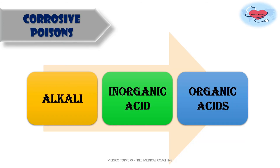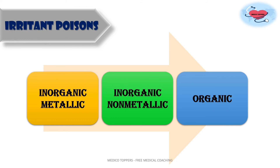Next come corrosives, which are further classified into strong acids, strong alkalis, and metallic salts — these are inorganic poisons. Similarly, irritants are classified into agricultural poisons, inorganic poisons, and organic poisons. We will discuss each of these one by one in the next coming videos.